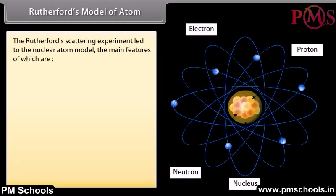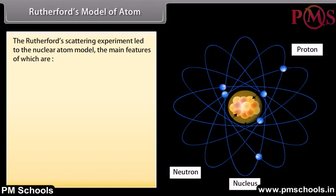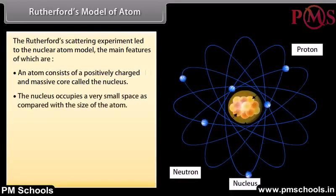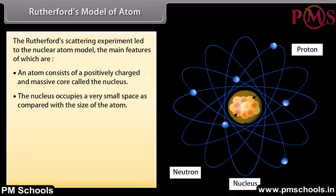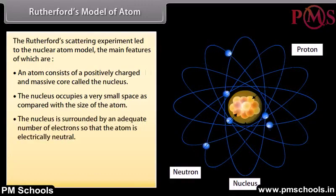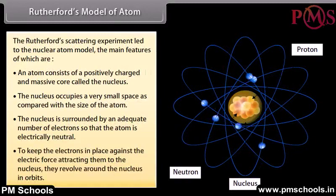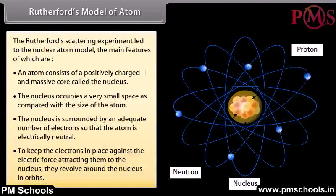Rutherford's model of atom. The Rutherford scattering experiment led to the nuclear atom model. The main features are: an atom consists of a positively charged and massive core called the nucleus; the nucleus occupies a very small space compared with the size of the atom; the nucleus is surrounded by an adequate number of electrons so that the atom is electrically neutral; and to keep the electrons in place against the electric force attracting them to the nucleus, they revolve around the nucleus in orbits.